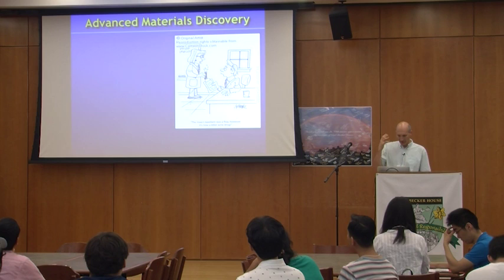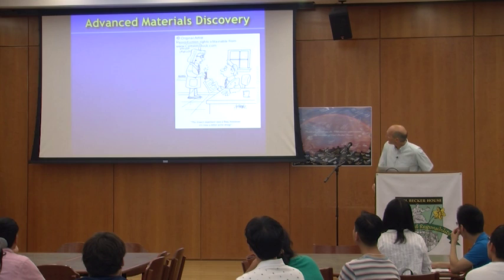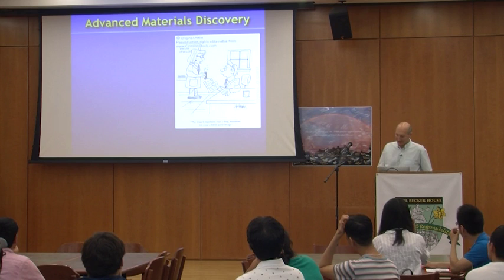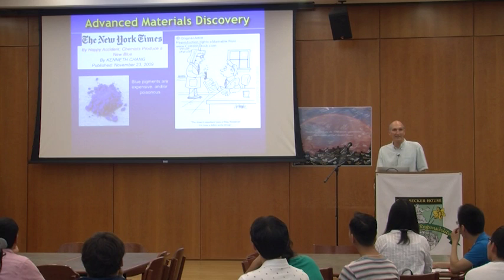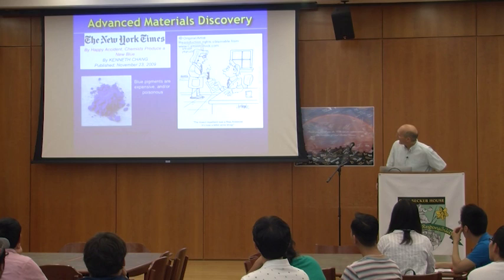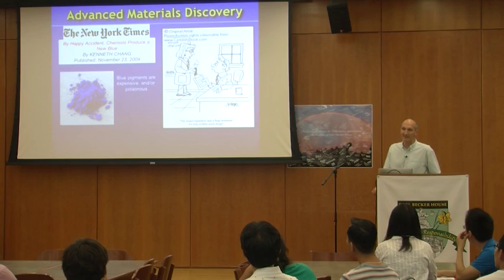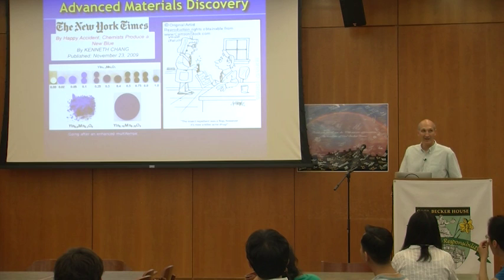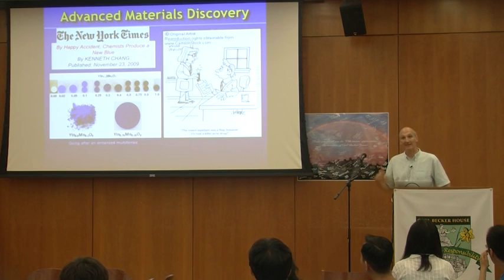Materials by Design differs from how many materials have been discovered in the past. In reality, many materials were discovered serendipitously — including materials like penicillin, Teflon, Viagra, Play-Doh, post-it adhesives, and the latest blue pigment. That blue pigment is Master Brahmanian's discovery. He made a very nice blue pigment. It's rare to have such stability in a blue color; it also absorbs relatively little heat. But what was he trying to make? He was trying to make a new multiferroic predicted by Nicola Spaldin, and instead he formed a different phase.